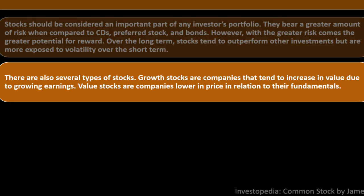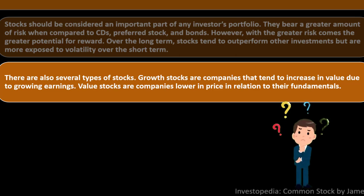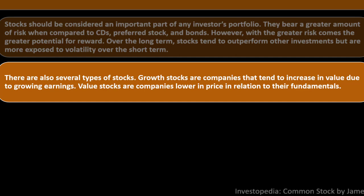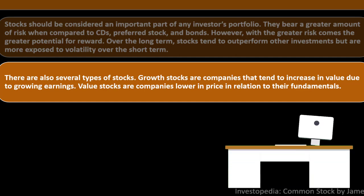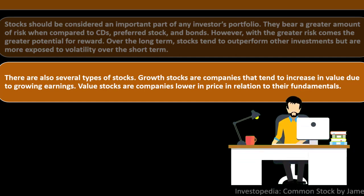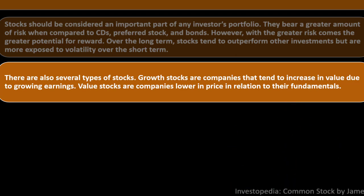There are several types of stocks. Growth stocks are companies that tend to increase in value due to growing earnings. Value stocks are companies lower in price relative to their fundamentals. You can think about where a stock is in its life cycle — similar to countries going through phases of industrialization and post-industrial development.